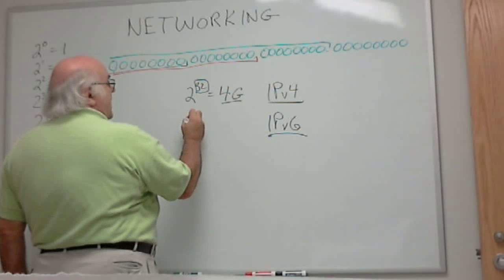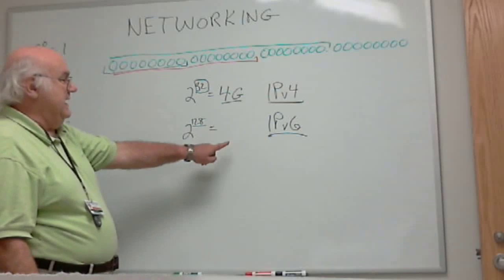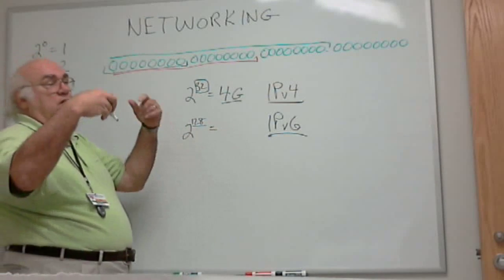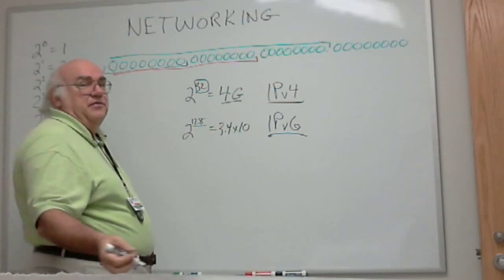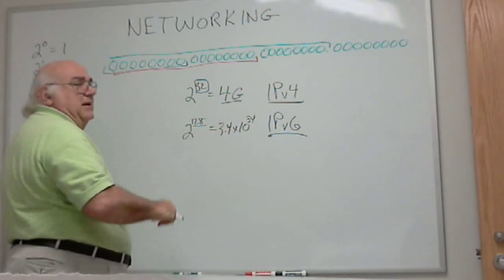IPv6 has 128 bits. Okay? That equals big number. I don't even know, 3.4 or something, 3.4 times 10 to the 34th or 10 to the 38th, somewhere in there. But that's a big number.